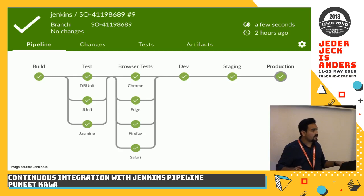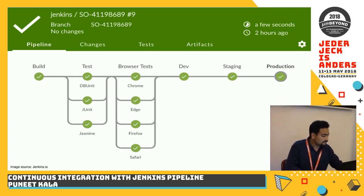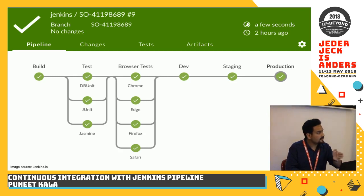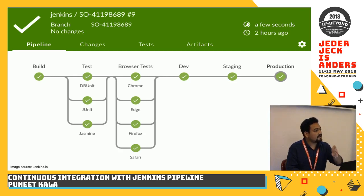This is how a typical pipeline would look. You have your build — that's your source code where it starts — and then you have different stages. On each stage you do a different process. For example, there would be a test stage, then a browser test stage, then dev, staging, and production.